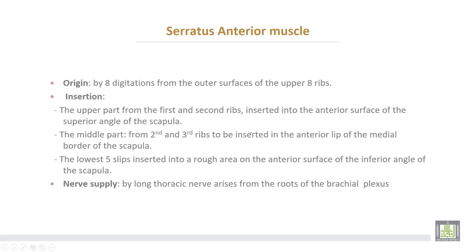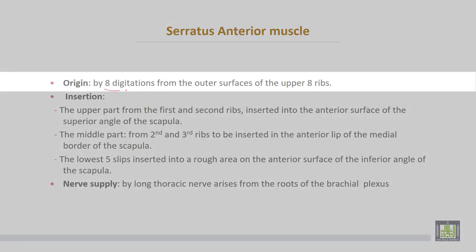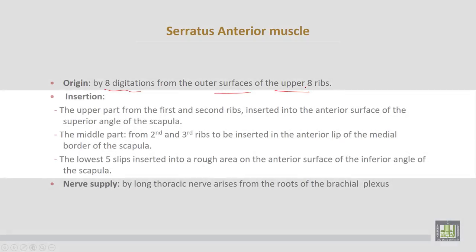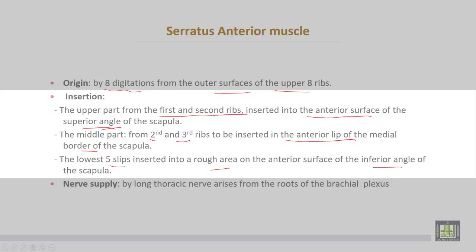Serratus anterior muscle takes origin by eight digitations from the outer surfaces of the upper eight ribs. For insertion: the upper part of the muscle from the first and second ribs is inserted into the anterior surface of the superior angle of the scapula, while the middle part from the second and third ribs is inserted into the anterior lip of the medial border of the scapula. The lower five slips are inserted into a rough area on the anterior surface of the inferior angle of the scapula.